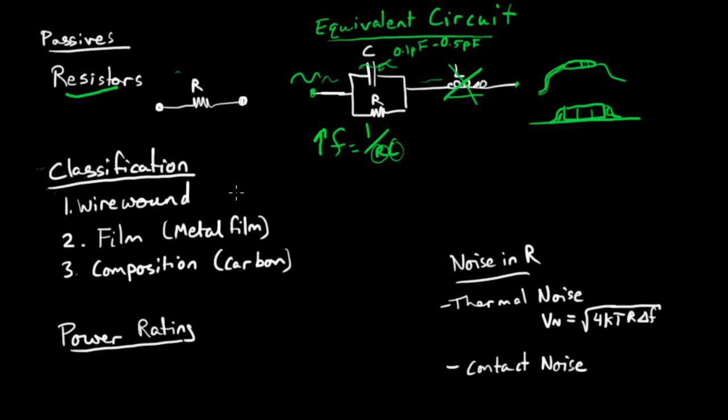Next up, I'll talk about the classifications of resistors. The main classifications fall in three broad categories: wire wound, film type, and composition type.